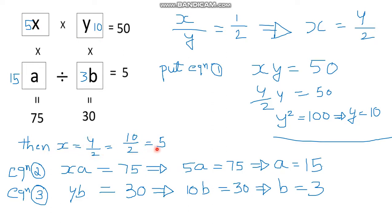Since X is equal to Y by 2, and Y is 10, we get X equal to 10 divided by 2, so X is equal to 5. Now from equation number 2, X times A is equal to 75. Substituting X equal to 5, we get 5A equals 75, and on simplification A is equal to 15.